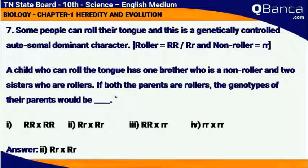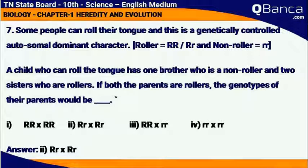If both the parents were rollers, the genotype of their parents would be Rr × Rr.